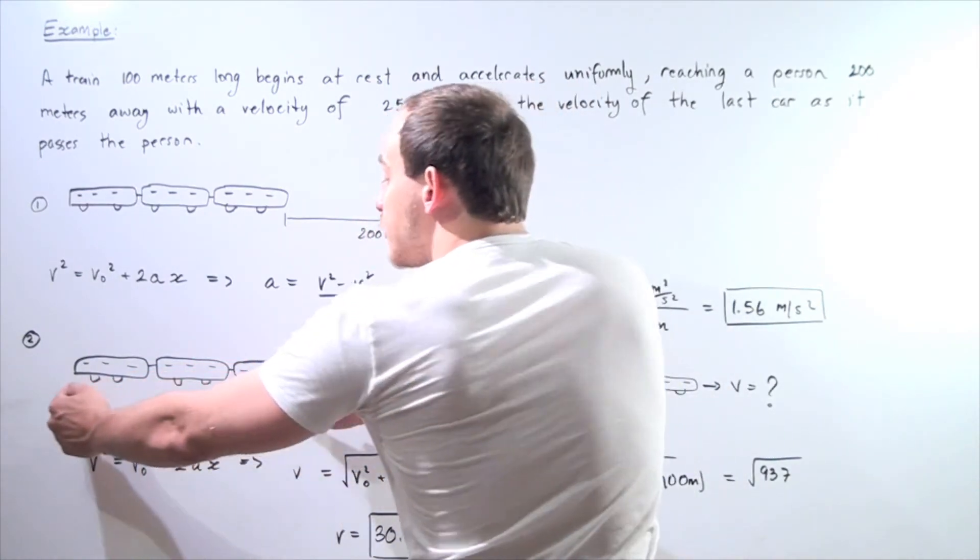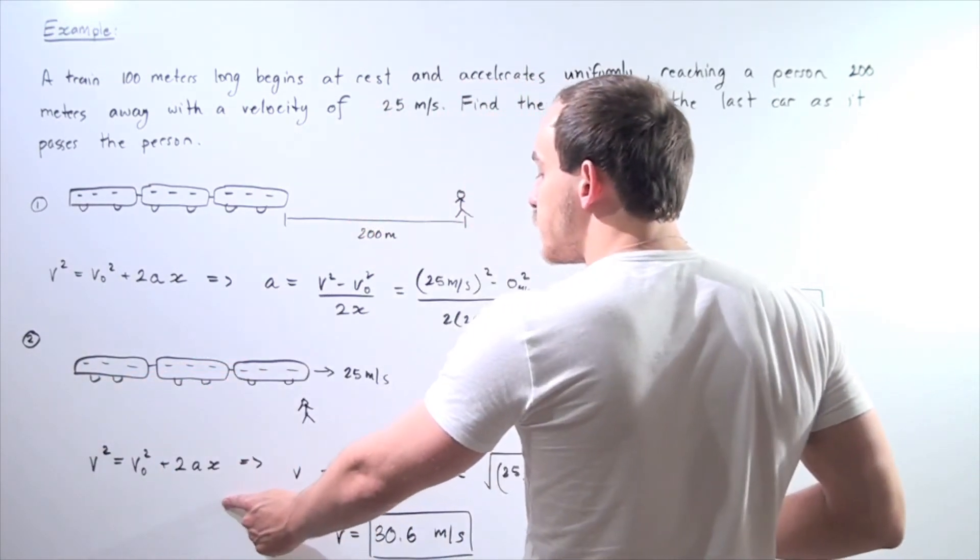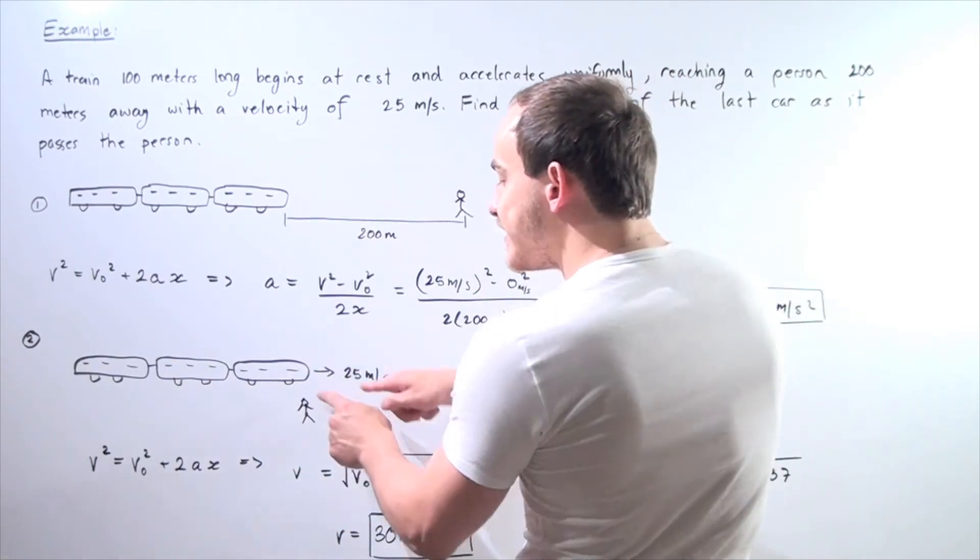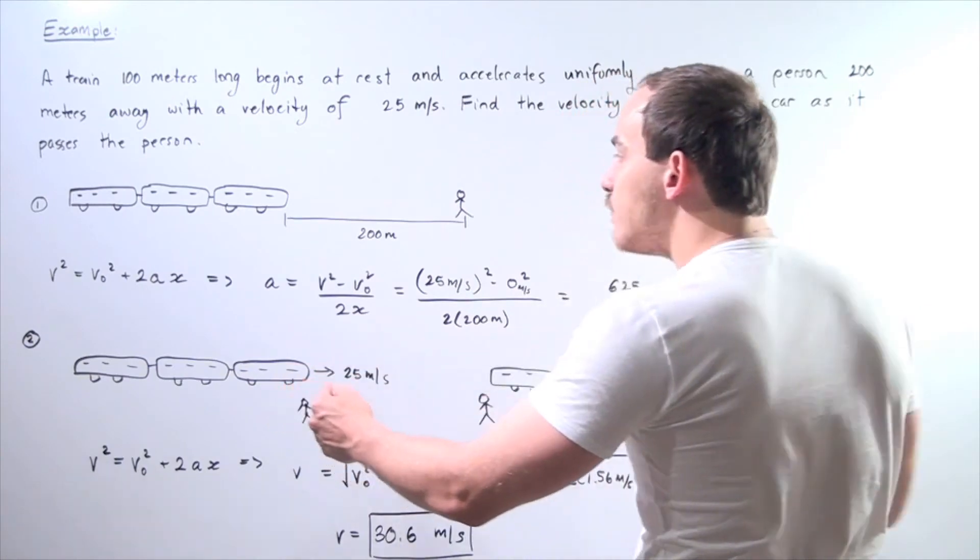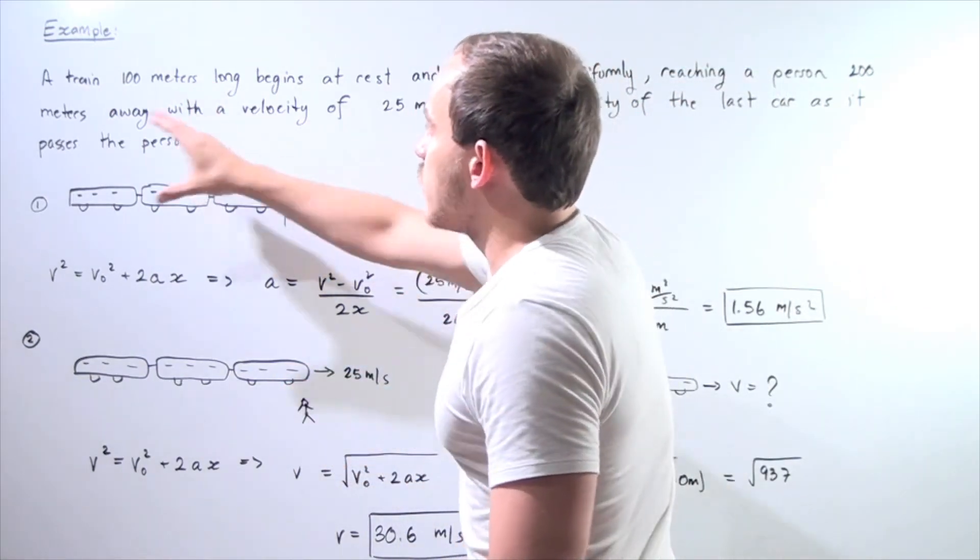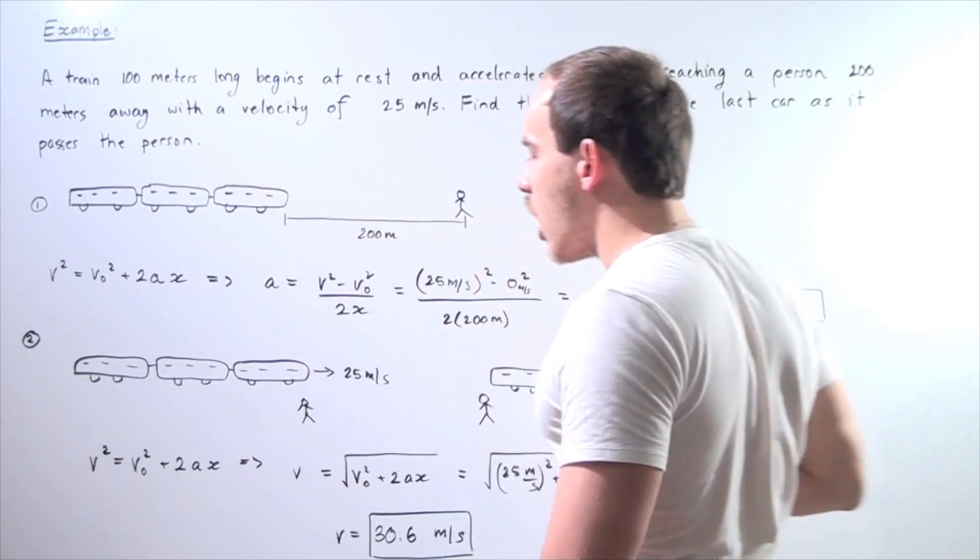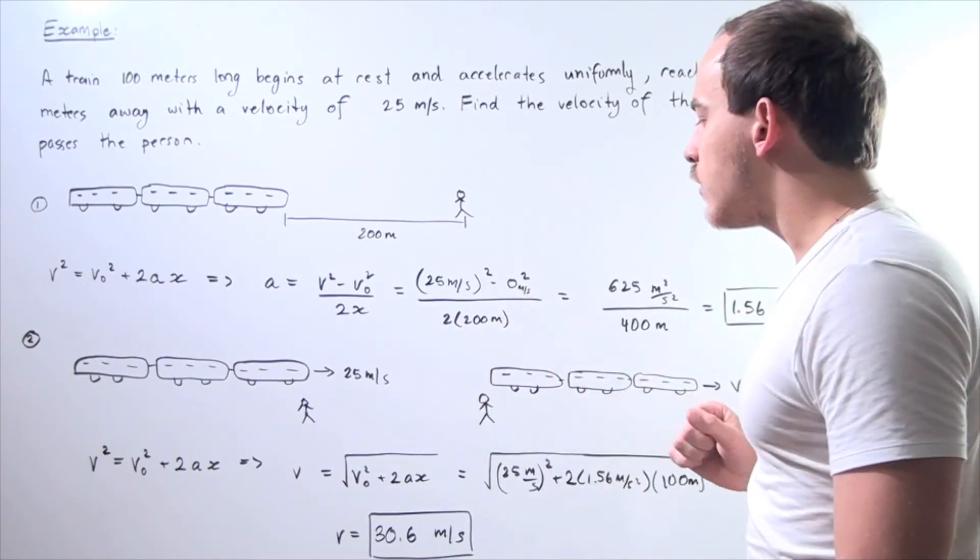The displacement is equal to the length of our car, the length of our entire train. That's our displacement. Because when the train begins at this point and ends at this point, the train has traveled 100 meters because the train is 100 meters long.